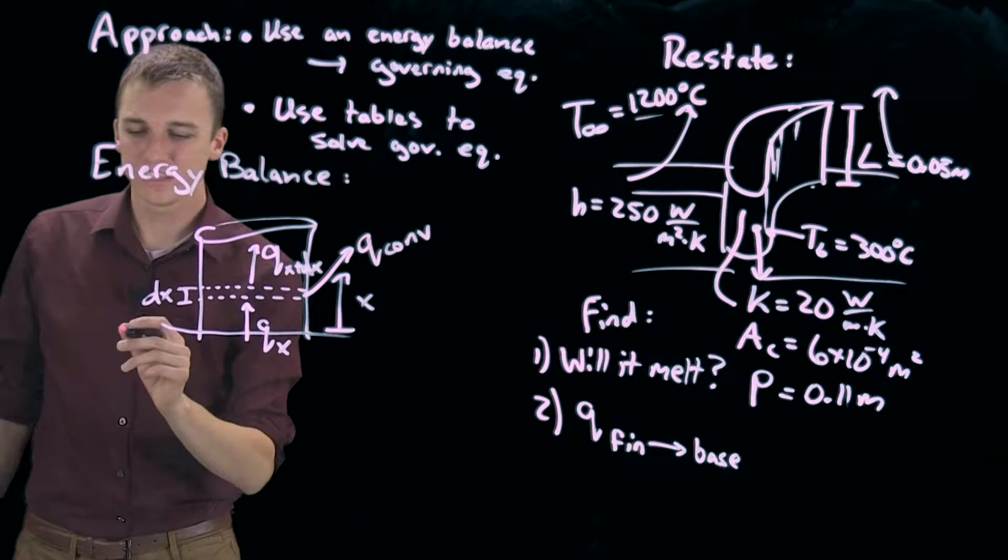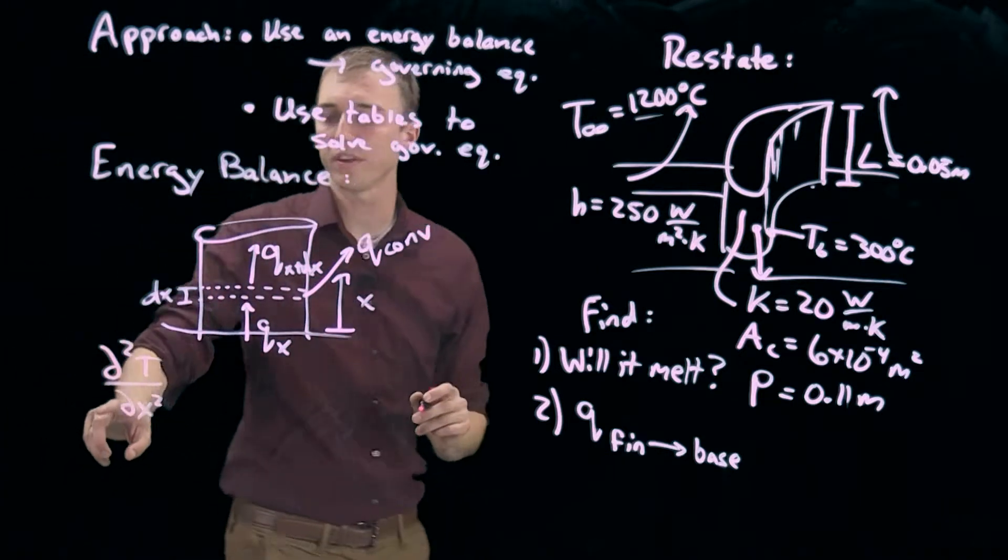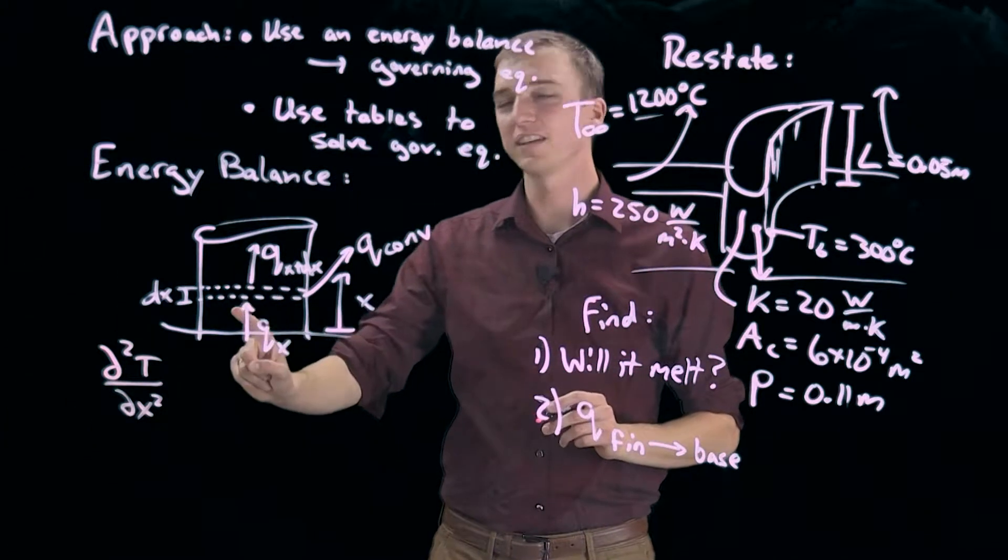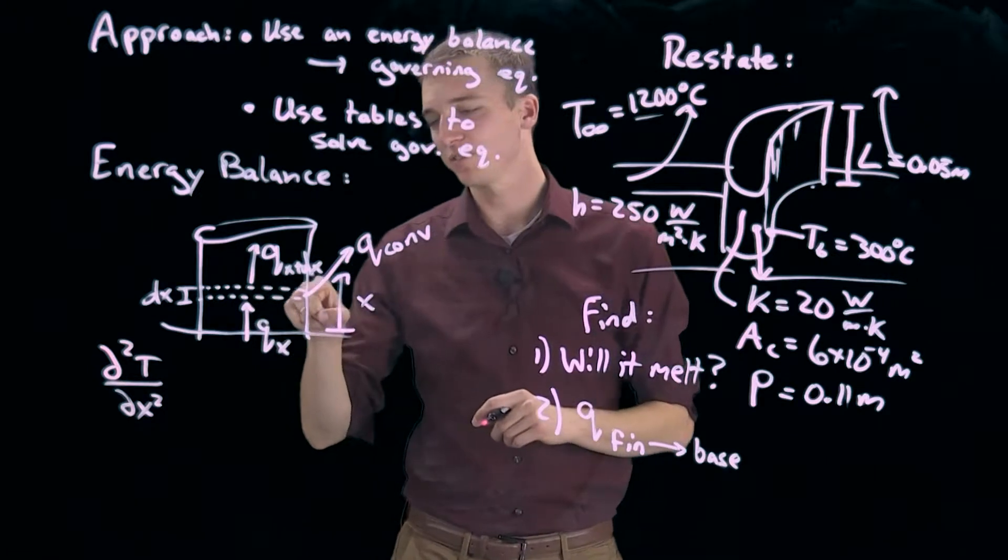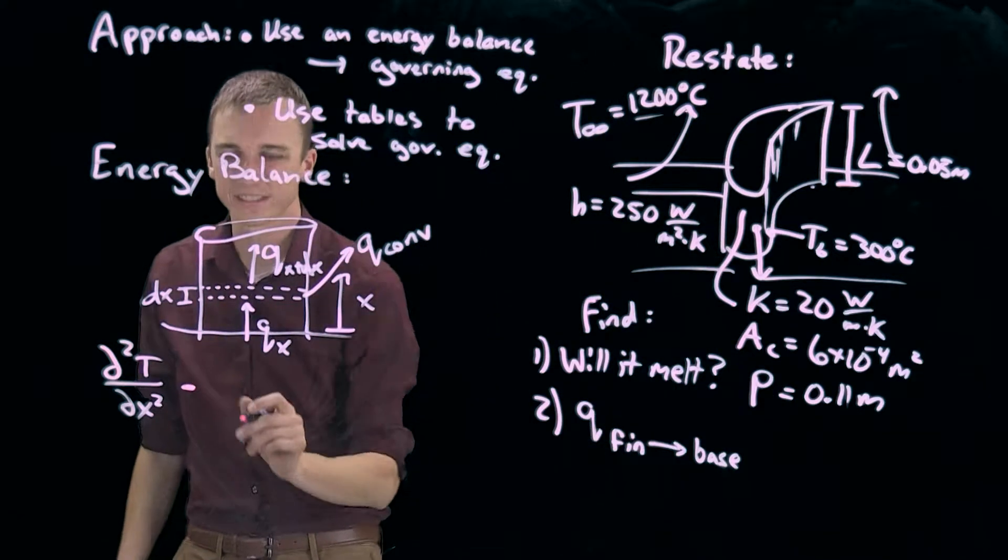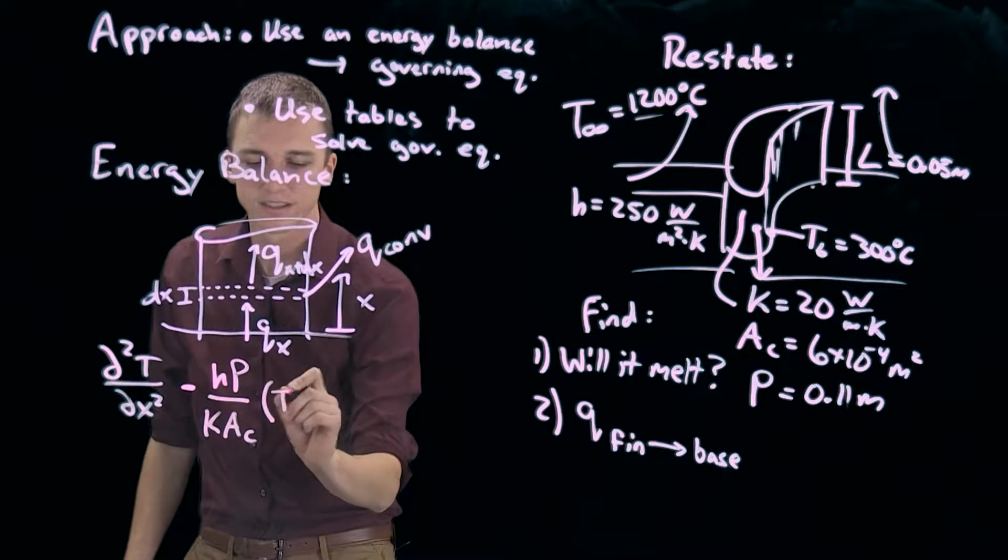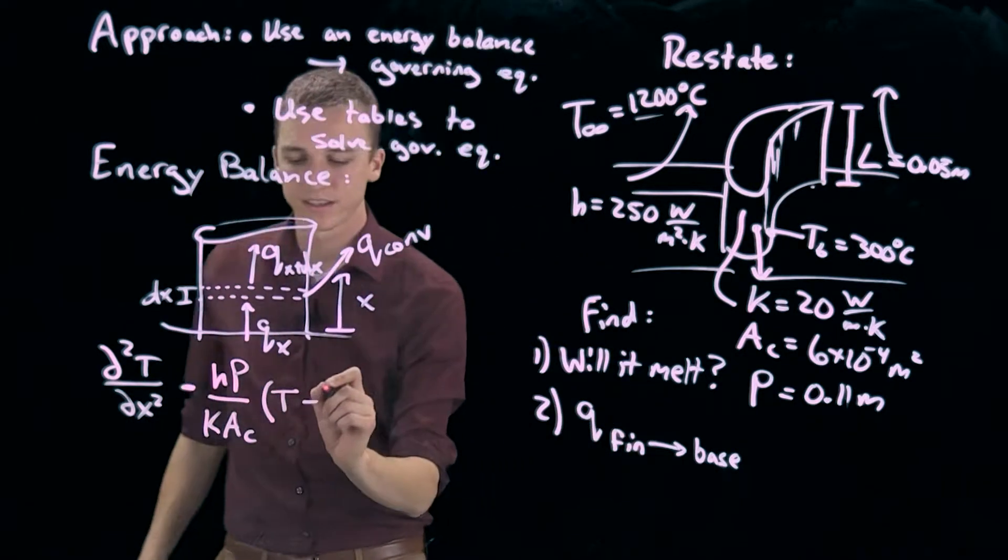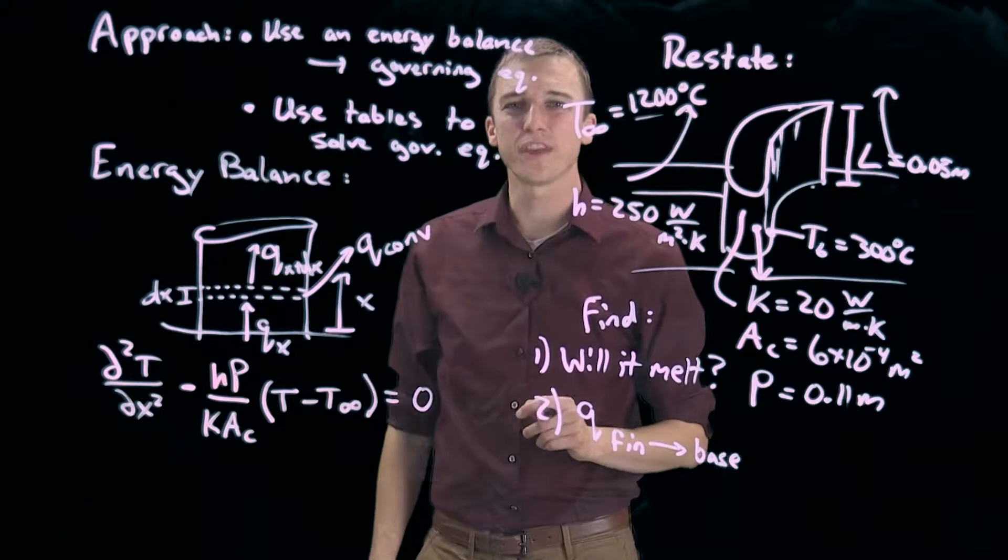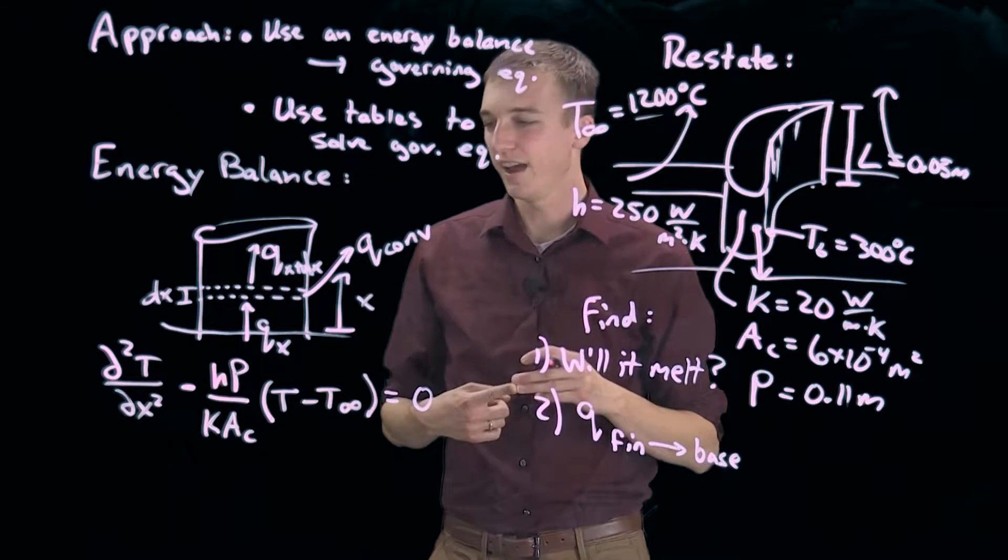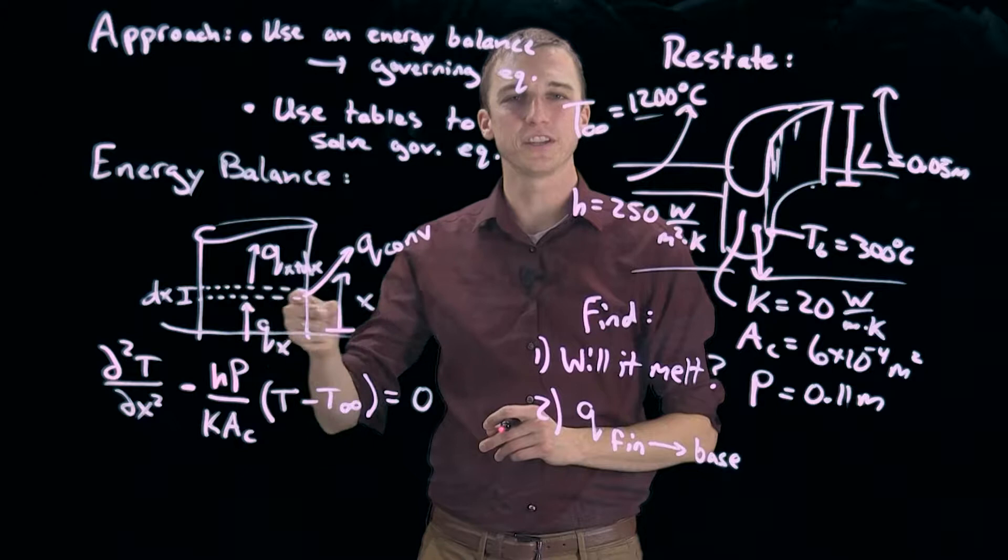If we write out the heat diffusion equation, then we'll see the difference in our heat conduction going in and coming out results in this term, d squared t dx squared. But now we're going to have a new term which accounts for the heat being added. Minus hp over kac times t minus t infinity, and that's going to equal zero. Here we've assumed steady state and we've also assumed 1D conduction.